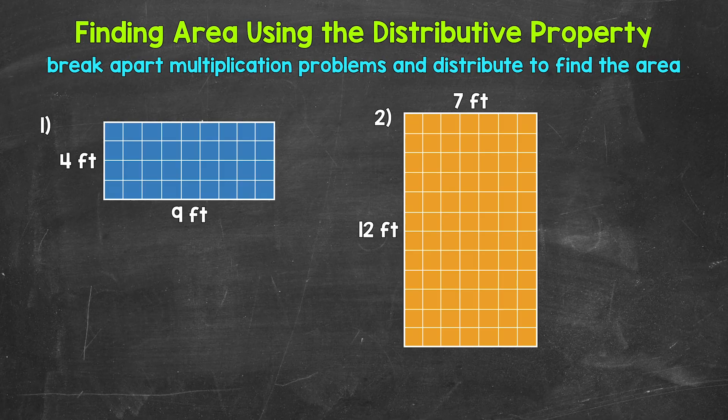This may be a little confusing at first, but stick with me and we will get this down. Let's jump into number 1, where we have a rectangle with side lengths of 4 feet and 9 feet. We have unit squares covering the rectangle to help us visualize the area and what we will be doing with the distributive property.